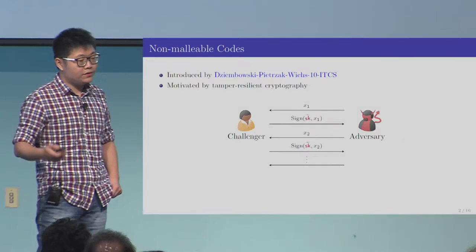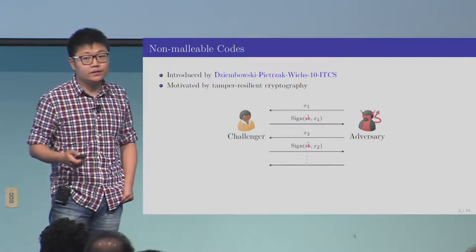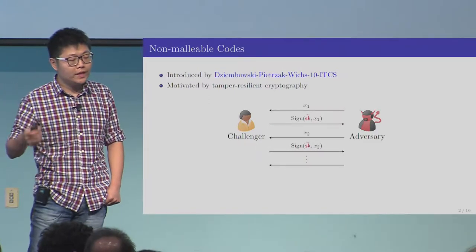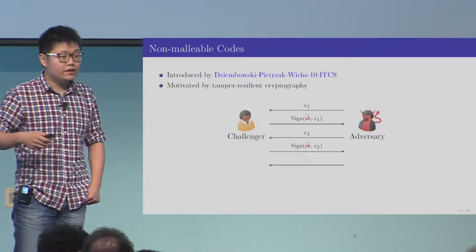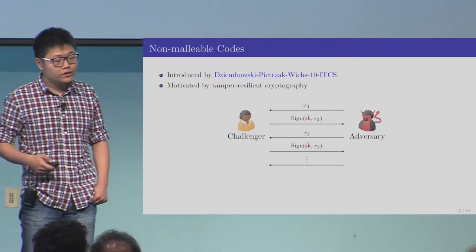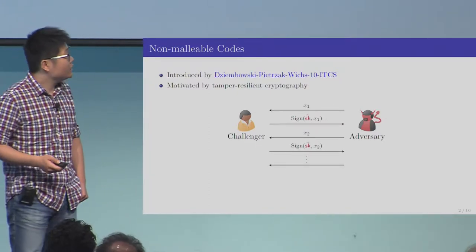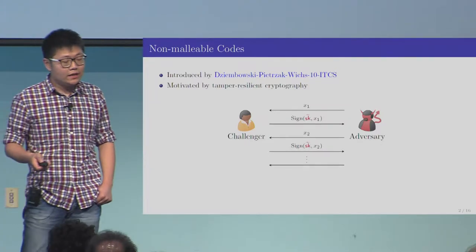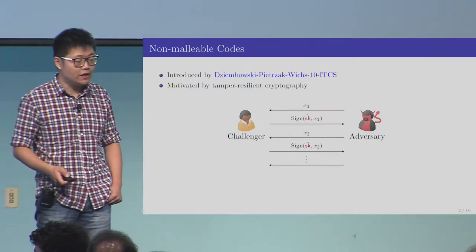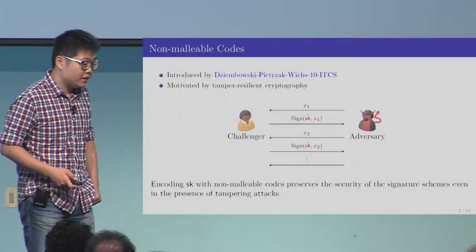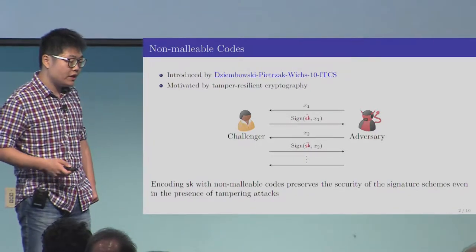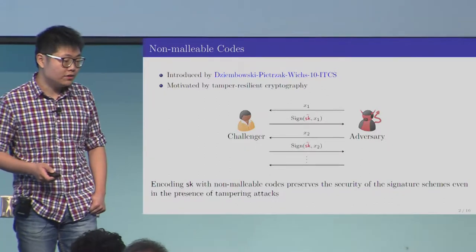This primitive is originally motivated by tamper-resilient cryptography. Imagine you have a signature scheme where the adversary might be able to tamper the internal state of the challenger, obtain a signature under some tampered secret key, and then try to forge the signature under the original secret key. Under such tampering attacks, the classical security guarantee of the signature scheme does not say anything about whether the adversary could succeed. The idea is that if we use non-malleable code to encode a secret key, this could help preserve the security of the signature scheme even in the presence of such tampering attacks.